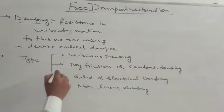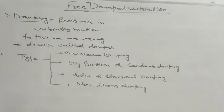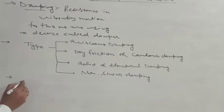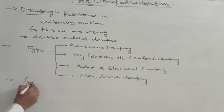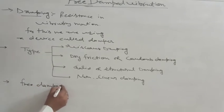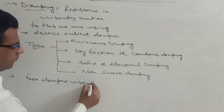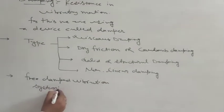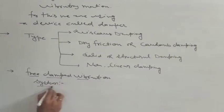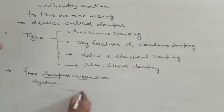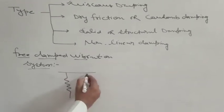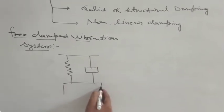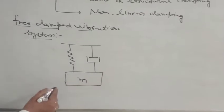Today we will discuss viscous damping. If we are using a viscous medium for damping, then the system is known as the free damped vibration system — or we can say the mechanical system of free damped vibration. We know that if we are using a spring and a damper, then the system is known as the free vibration system.